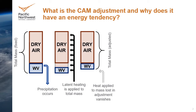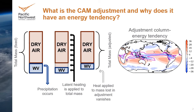While these mass changes are small, the energy tendencies associated with the adjustment are not. The column energy tendency associated with the adjustment was recently shown by Loretson and Williamson to be on the order of tens of watts per meter squared, as can be seen here. This figure on the right is the annual mean energy tendency resulting from the mass adjustment procedure I have just described. It is large and has a very distinct regional pattern tied to areas of net evaporation or condensation, because the adjustment itself is fundamentally linked to the treatment of water vapor.